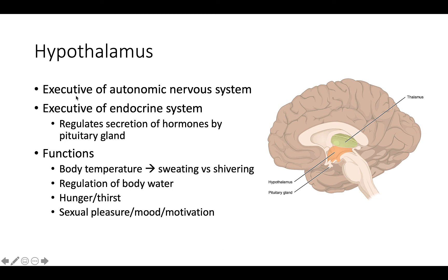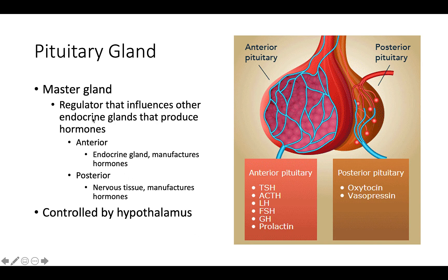The hypothalamus is the executive of the autonomic nervous system and also the executive of the endocrine system, as it regulates hormone secretion by the pituitary gland. Functions of the hypothalamus include regulating body temperature — sweating when too hot, shivering when too cold — body water regulation, hunger and thirst mechanisms, and sexual pleasure, mood, and motivation. The pituitary gland is the master gland, a regulator that influences other endocrine glands, produces hormones, and is controlled by the hypothalamus.